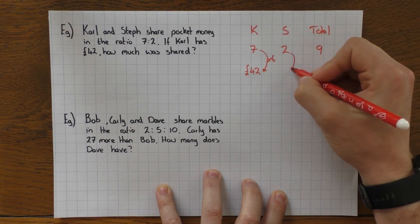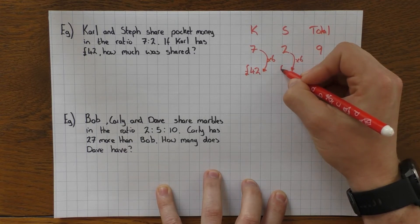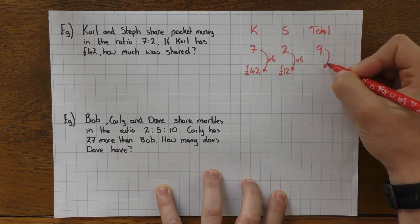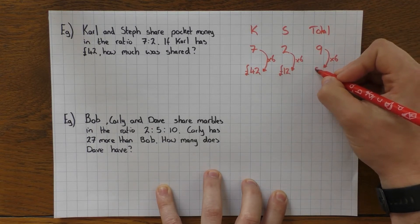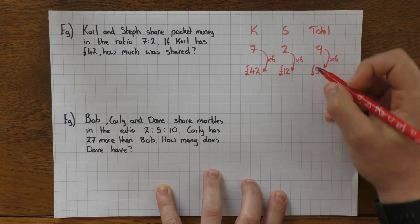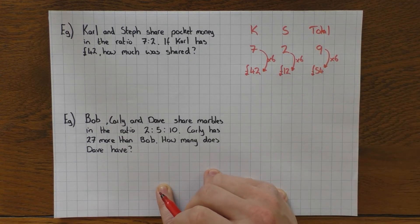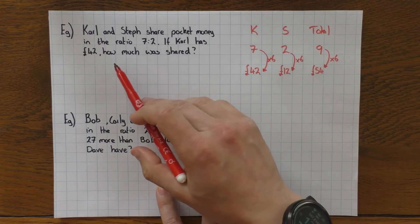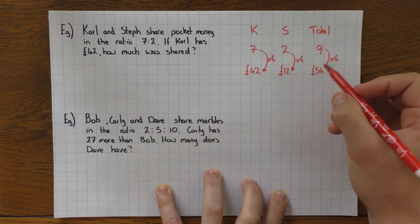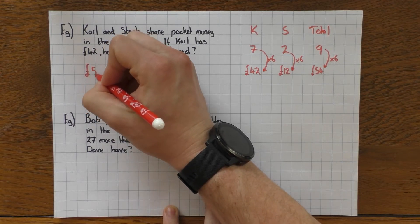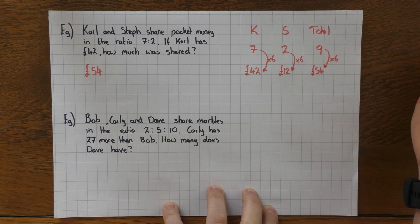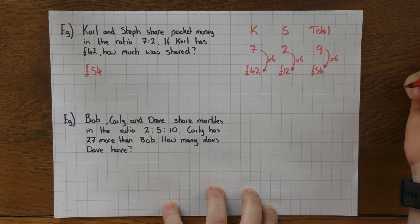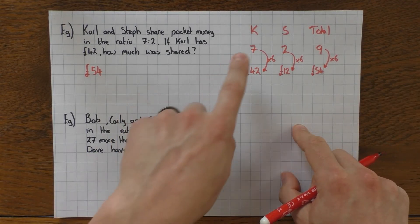And then I'm going to spot what I need to do. So 7 times by what gets 42? Again, if you're unsure, go backwards: 42 divided by 7 is 6, so I need to times by 6. Do the same thing here: times by 6 is £12. And the same here: times by 6 is £54. And again, just check it: 42 add 12 is 54, yep that's fine. So how much was shared in total? Well, £54 would be your answer. It could equally ask how much did Steph get—in which case just look at your table and say she got £12. But in this question it just says how much was shared, so in this case it was £54.